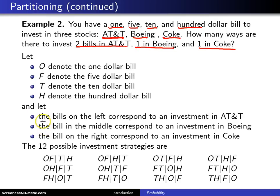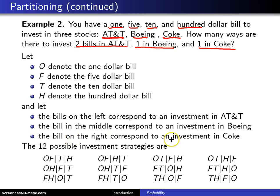We're going to let the bills on the left correspond to the two that go into AT&T. The bill between the bars, or in the middle, is an investment in Boeing. And the bill on the right corresponds to an investment in Coke.